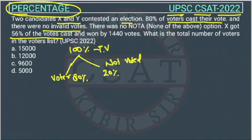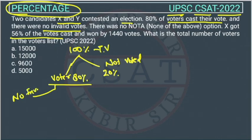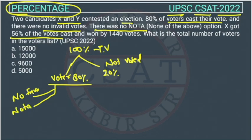Now out of this 80%, there is no invalid vote and there was no NOTA option chosen by anyone. So all votes went either to X or to Y — no third person, no NOTA.